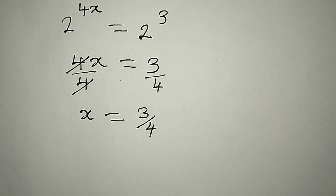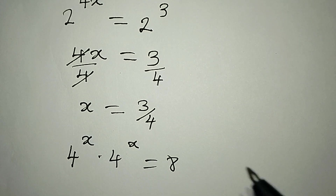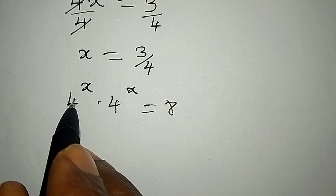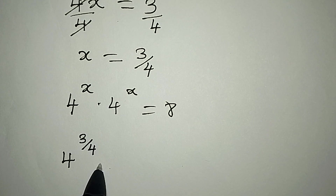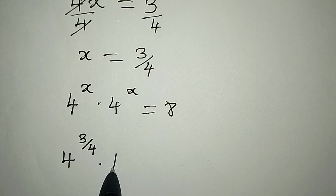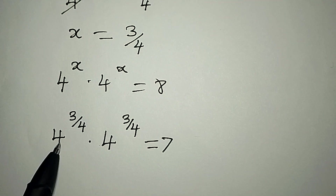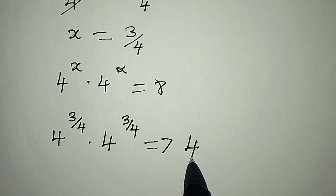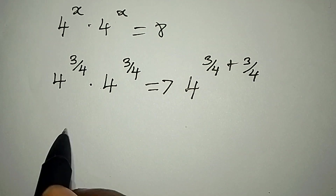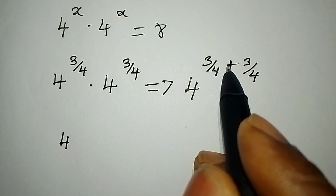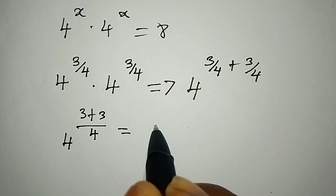We can confirm our answer. Because 4 to the power of x times 4 to the power of x gives us 8. So in place of x, we write 3 over 4. We have 4 to the power of 3 over 4, multiplied by 4 to the power of 3 over 4. Picking one of the bases, that will be 4, then we add the powers: 3 over 4 plus 3 over 4. The LCM of the powers is 4, so we have 3 plus 3, which gives us 6.